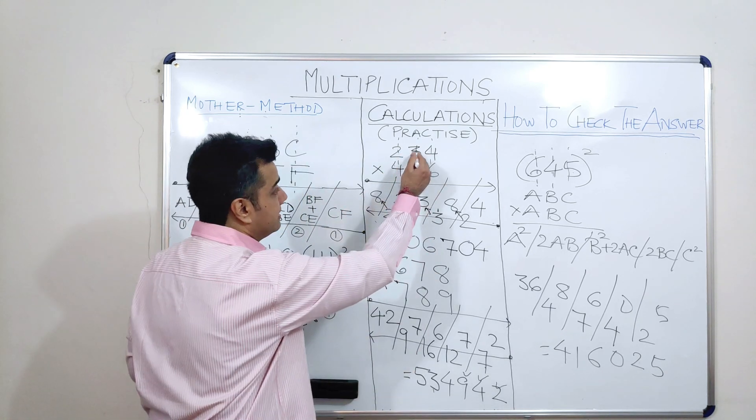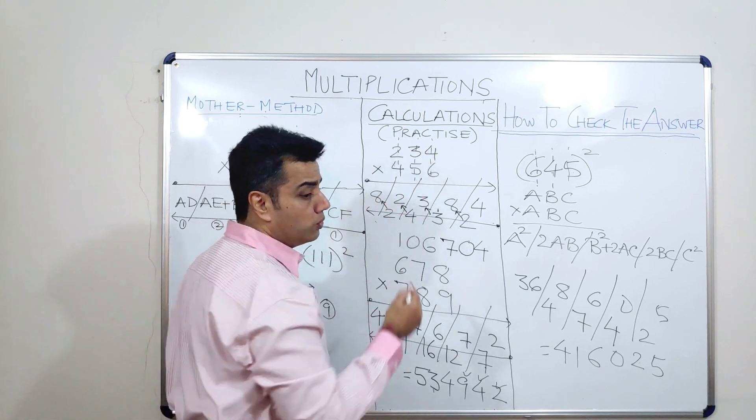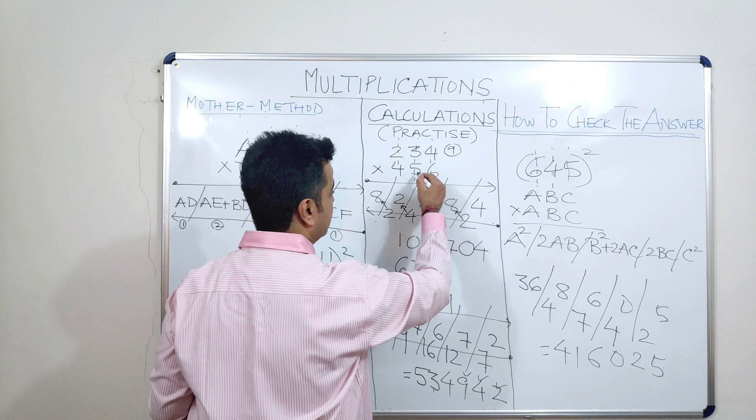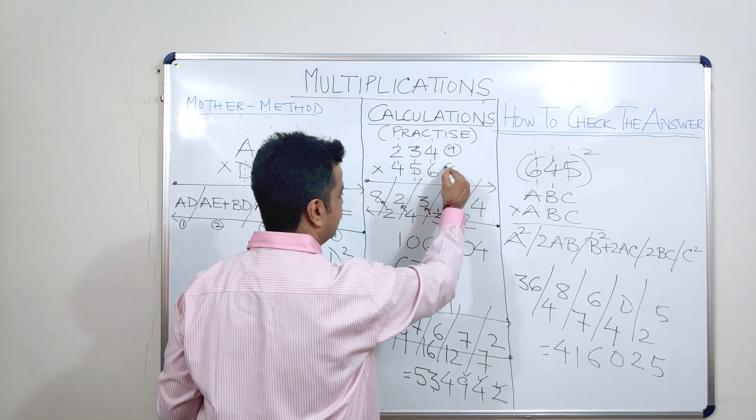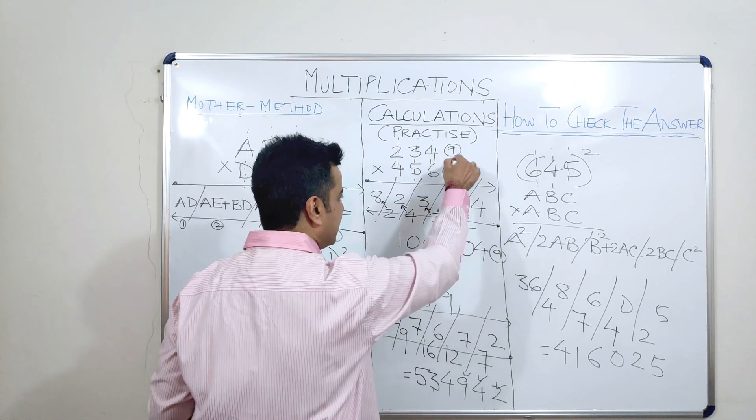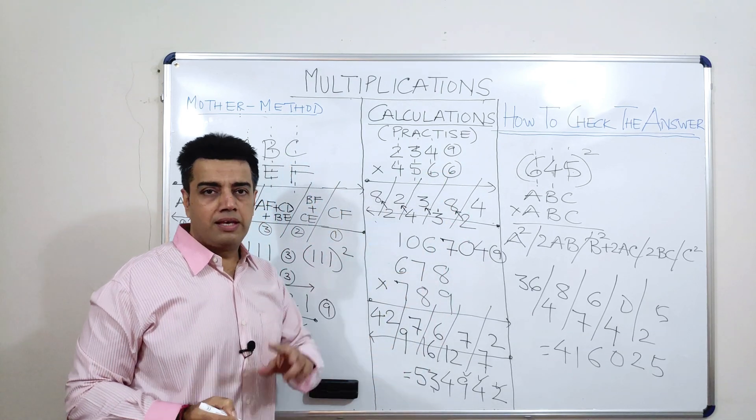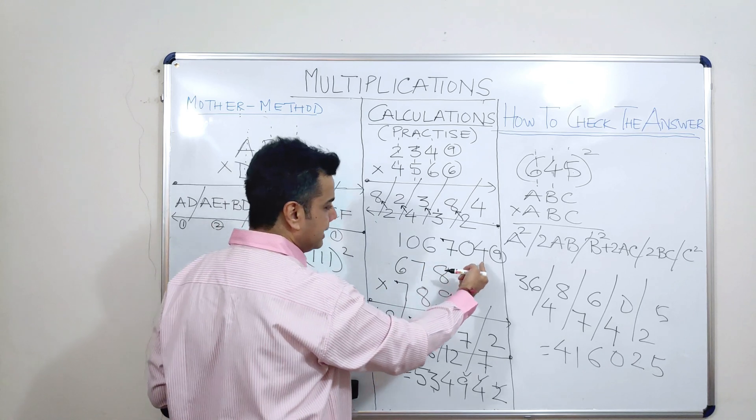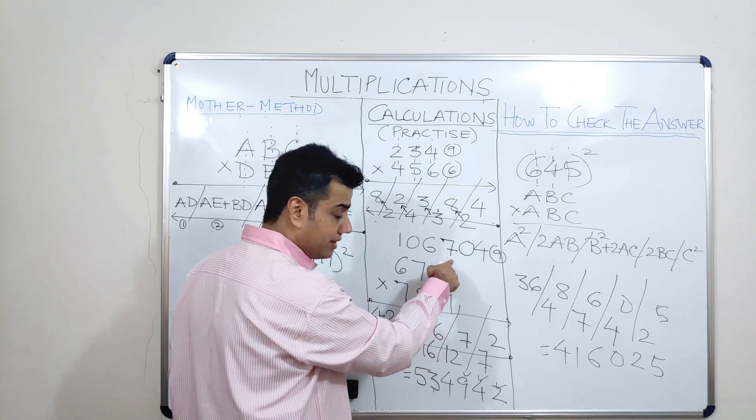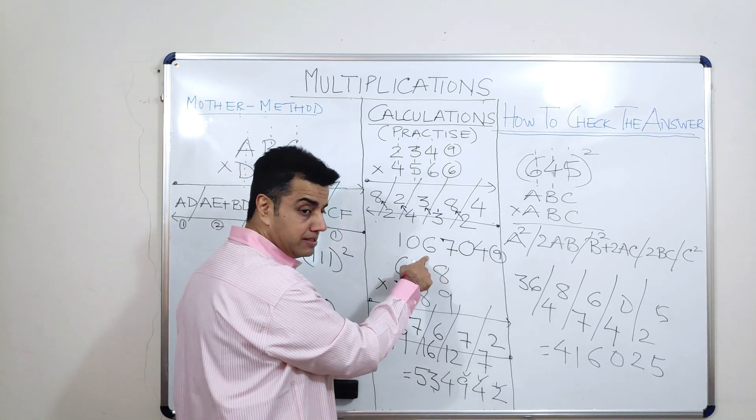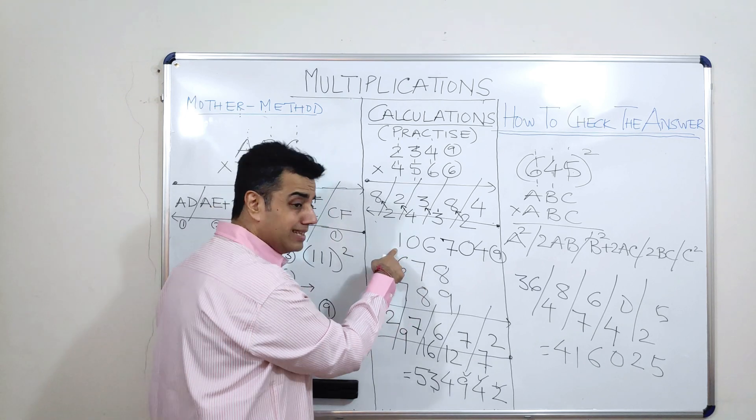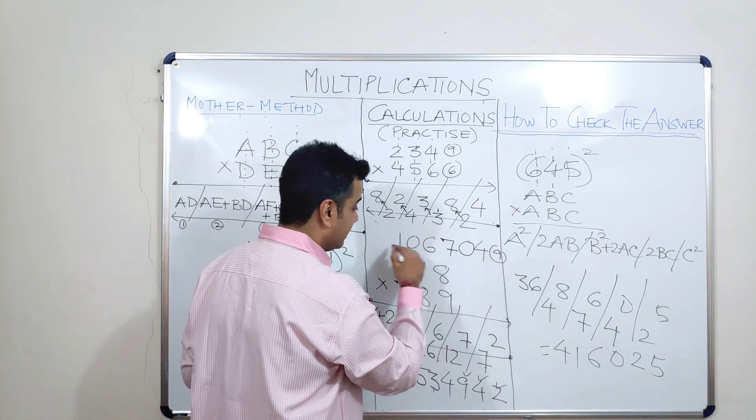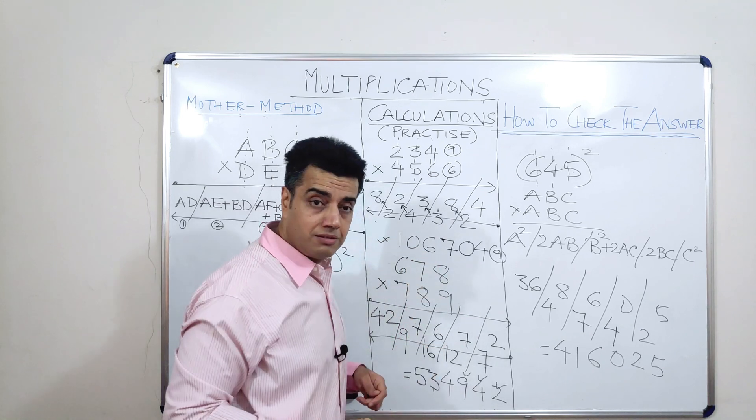Let's refer to the case here. How much is the digital root for 234? The digital root for 234 is 9. The digital root for this is 6. The digital root finally should be 9. Why? Because 9 into 6 is 54. 54 means 5 plus 4 which is 9. Let us see whether we are getting 9 here or not. 4 plus 7? 11. 11 plus 6? 17. 17 plus 1? 18. 18 means 9. Because 1 plus 8 is 9. The answer should be correct.